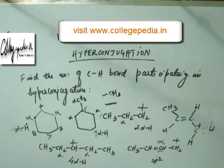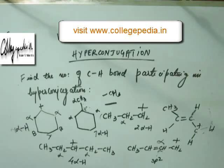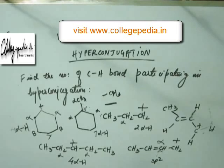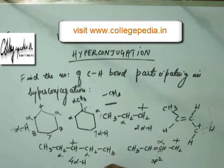After a few lectures, when we start reactions and encounter intermediates and have to find their stability, we will use this concept. We will use the phenomenon of hyperconjugation to determine stability — the intermediate with more hyperconjugation will be more stable.